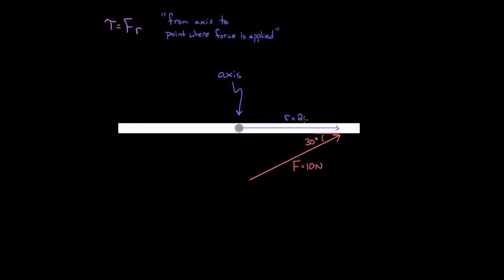Let's say this happened to be two meters from the axis to the point where this 10 Newtons was applied. Now we can solve for this torque, but you have to be careful. A mistake I might make is to say the force was 10 Newtons and R is two meters, so torque should just be 20. But that's not right, because if you write this formula for torque, the force means the perpendicular force to R — only the perpendicular component exerts a torque on the door.